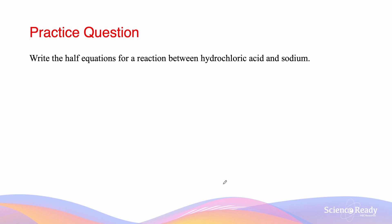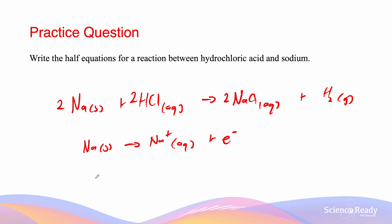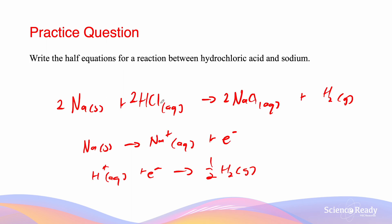This question asks us to write the half equations for the reaction between hydrochloric acid and sodium. If we remember, the reaction between a metal and an acid produces a salt and hydrogen gas. In this reaction, sodium has been ionized into the sodium+ cation. The next question asks us to write the half equations to work out the net ionic equation for the reaction between hydrochloric acid and sodium. We wrote the half equations for sodium as equation 1, and equation 2 for the other half. Since there is the same number of electrons on both sides, we add the two equations together to get the net ionic equation.